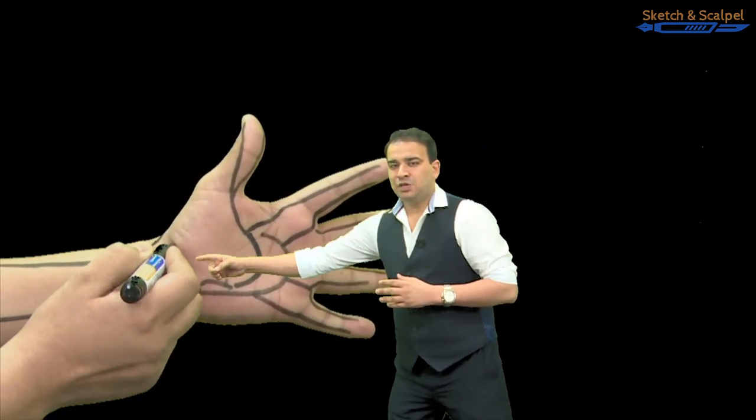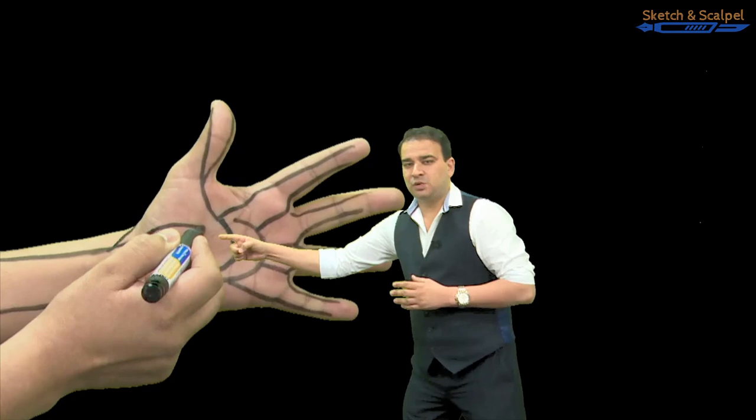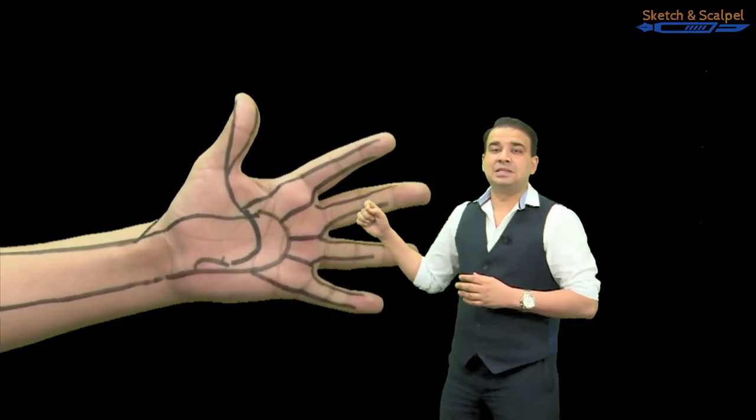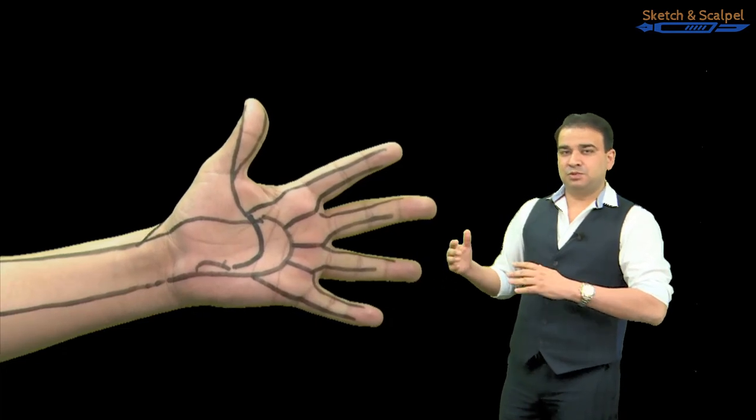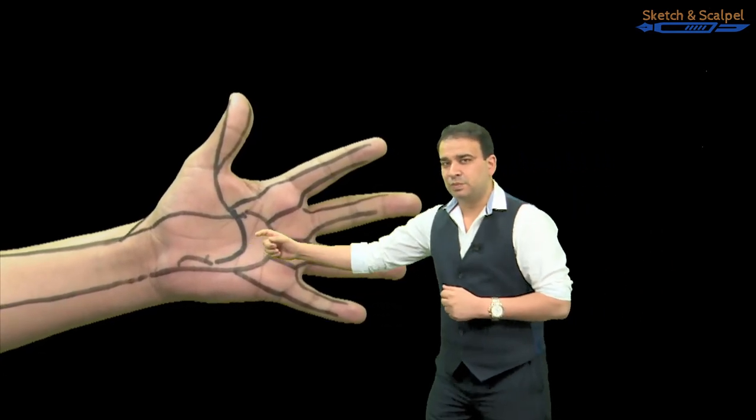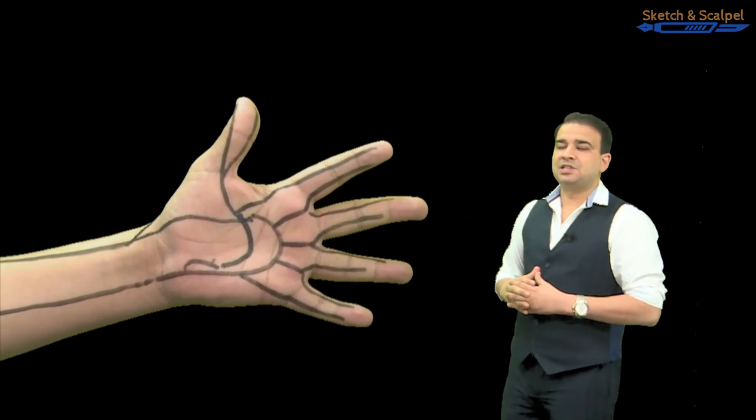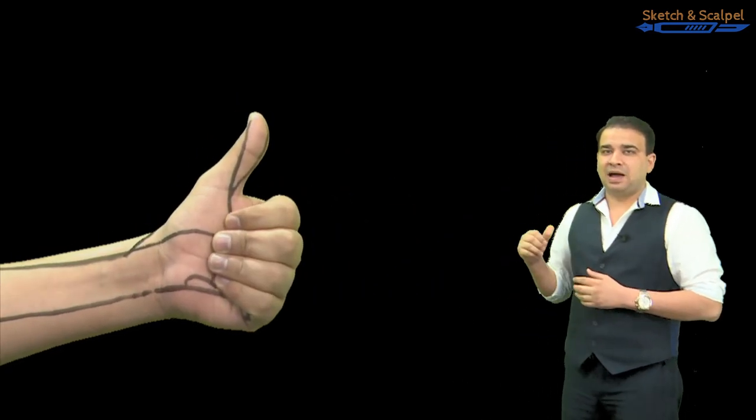Whereas a branch of radial artery will go superficial to the flexor retinaculum and completes the superficial palmar arch. The radial artery is not coming superficial to it—the main radial artery—but a branch is coming superficial to it to complete this arch, that is the superficial palmar arch.